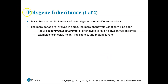That's sex-linked inheritance. And then there's polygenic inheritance, which means that many genes add or sum their effects together to give you that trait. If you think about skin color, height, intelligence, and metabolic rate — these don't have just two versions. We don't just have dark and light; we have many, many versions of skin color, many versions of height, many versions of intelligence. We say there is a continuous variation between the two extremes of the trait.